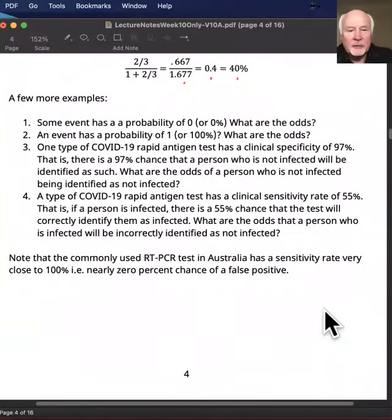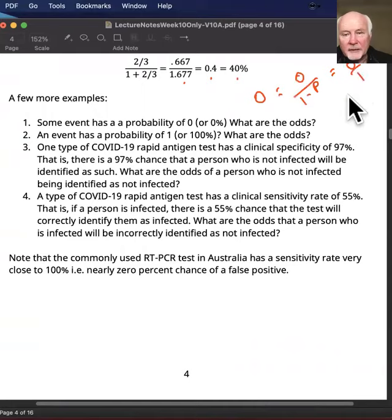Now let's just go through a few more examples here and we'll look at some boundary cases as well, some extreme cases. So we'll start with an event that has a probability of zero. So what are the odds there? Well, the odds are going to be zero over one minus the probability. So that's zero over one, and that's zero. So that case is quite straightforward. The odds are the same as the probability in that case.